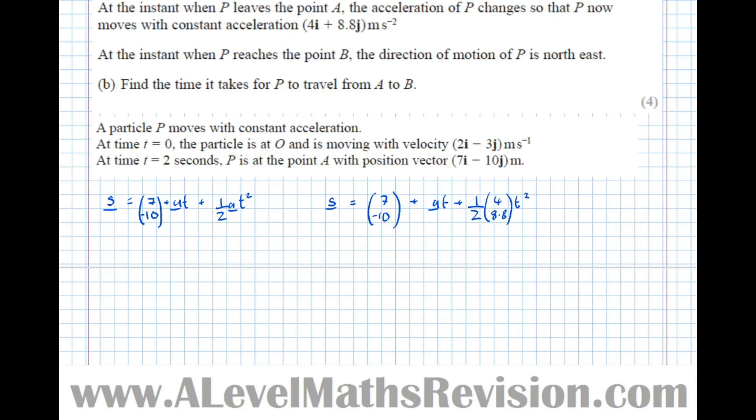The only thing now that we don't know is U, the initial velocity at A. Well actually, we can easily work that out because U is the velocity at A. So if we use this information here for the motion between the origin and A.